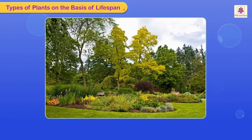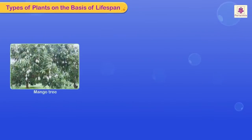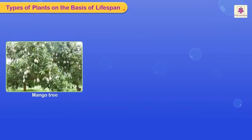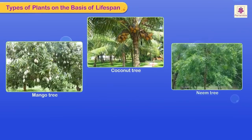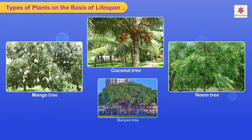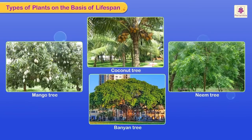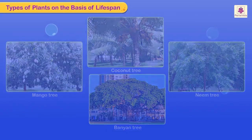Perennial plants are plants that grow for more than two seasons or two years. Most of the trees come under this category. Mango tree, coconut tree, neem tree, and banyan tree are perennial plants.